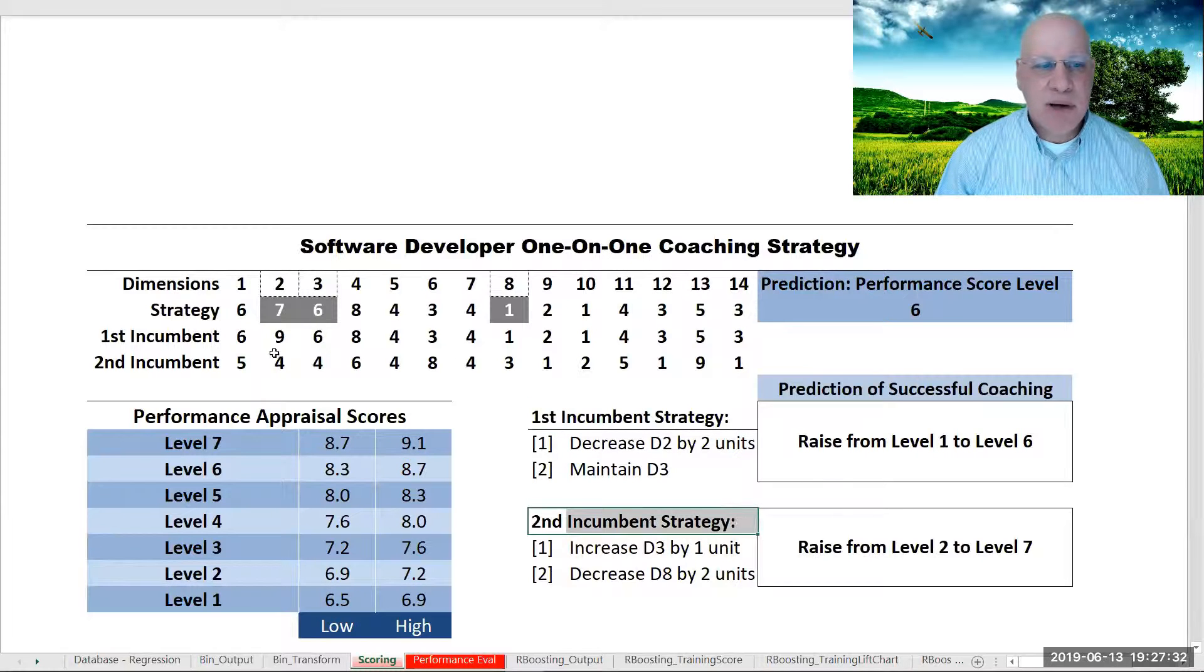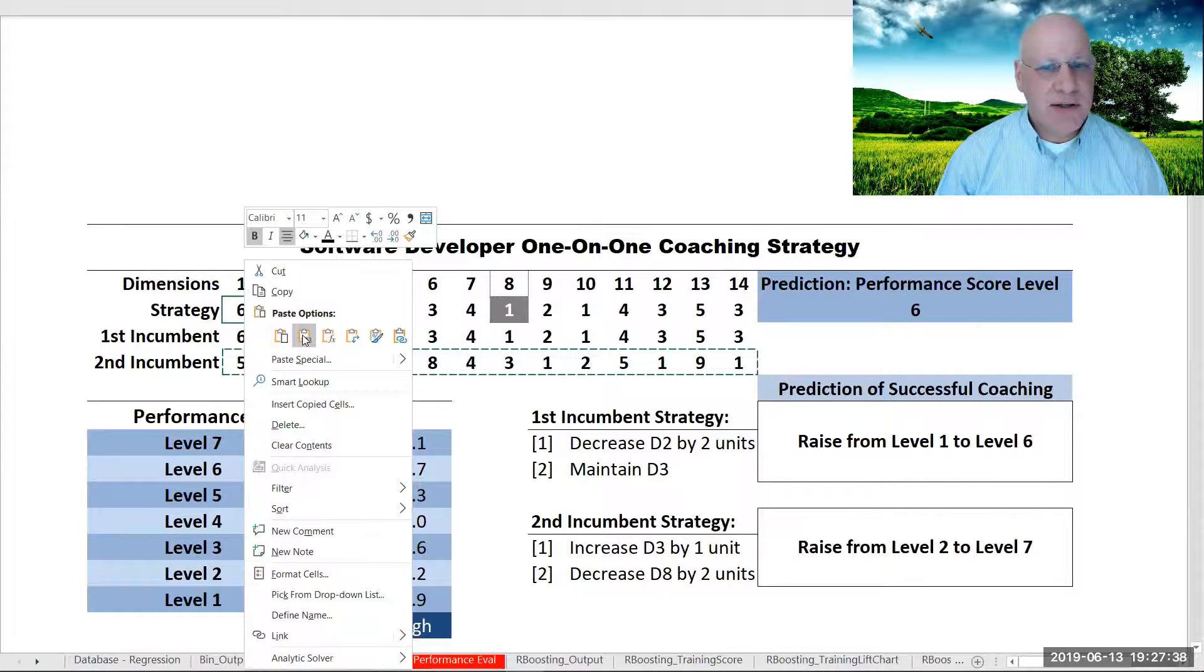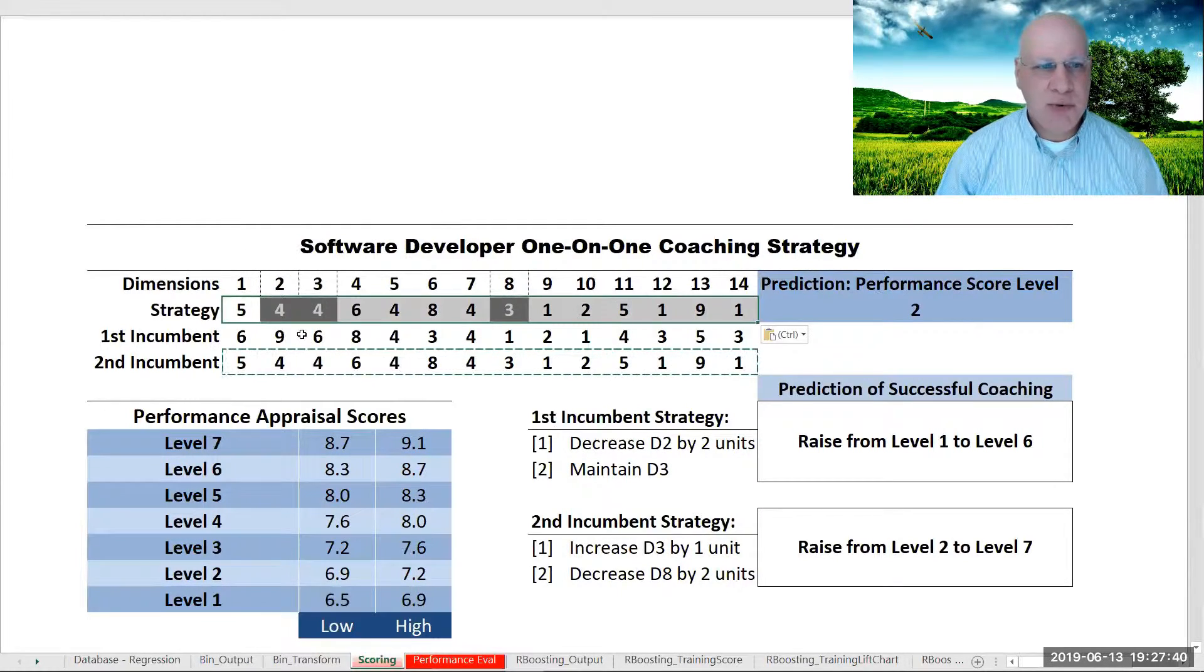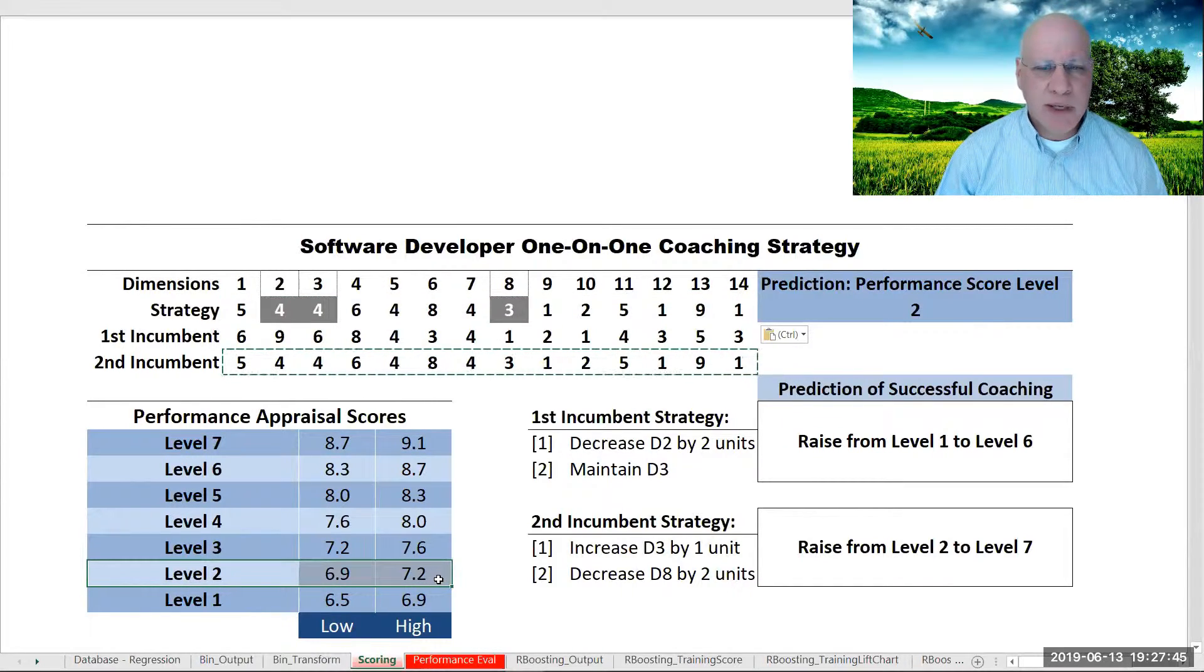If we look at incumbent number two and we copy that individual's results into the calculator, the interactive worksheet, we see that this individual was rated at the second level of performance.